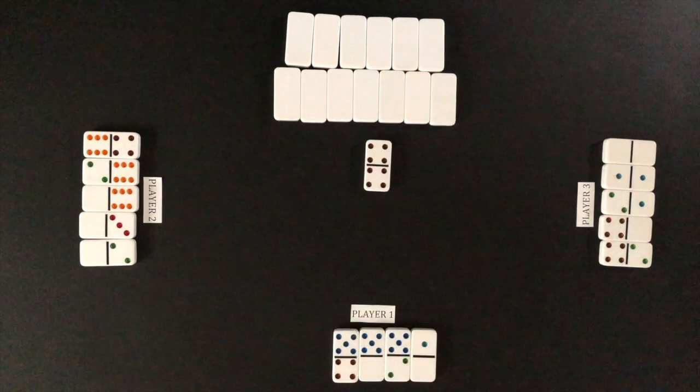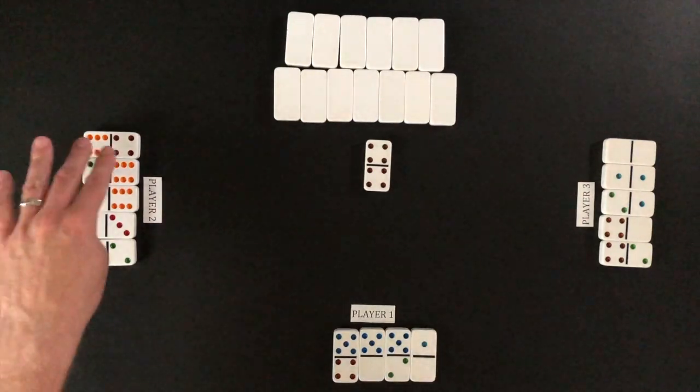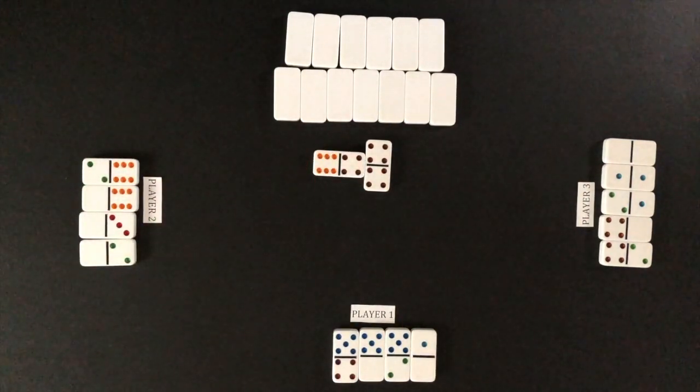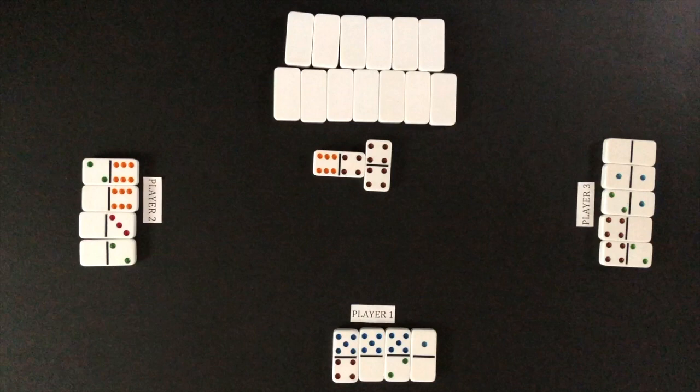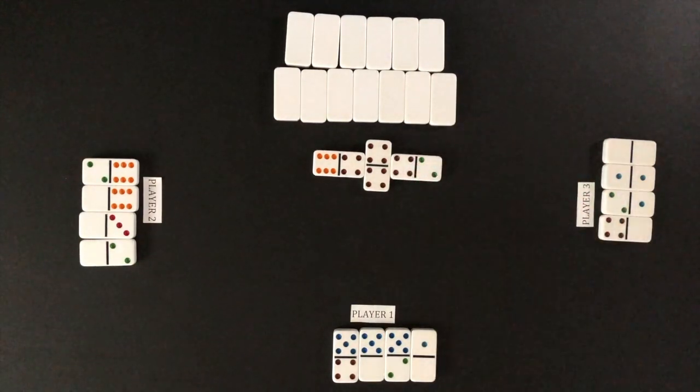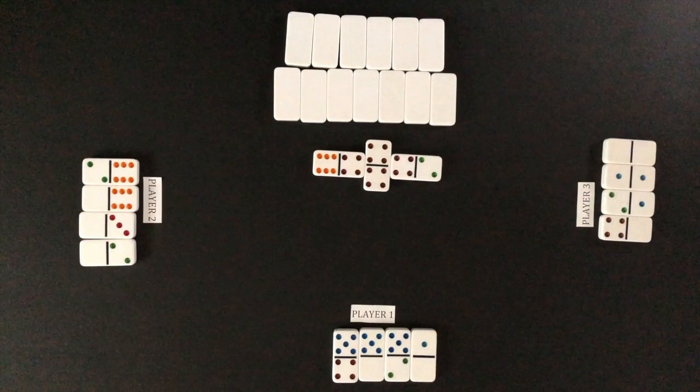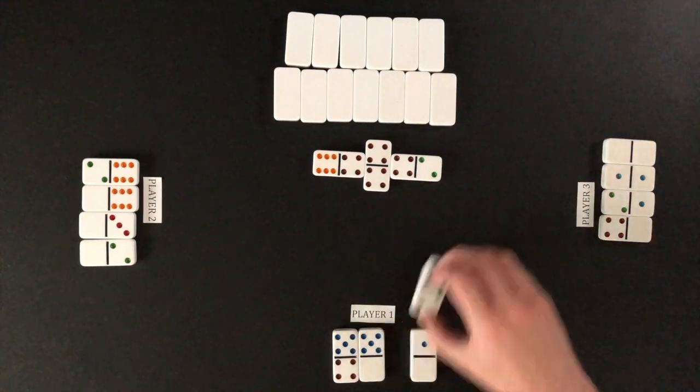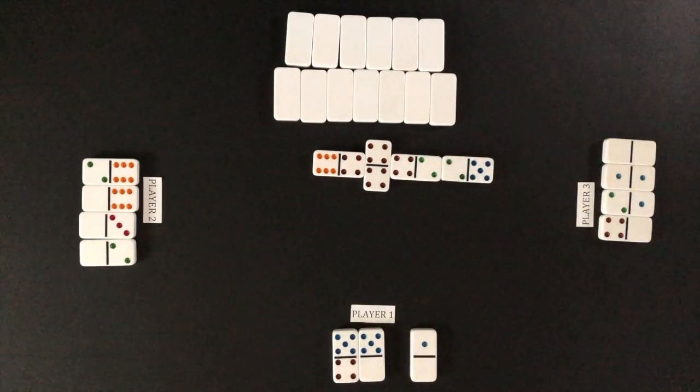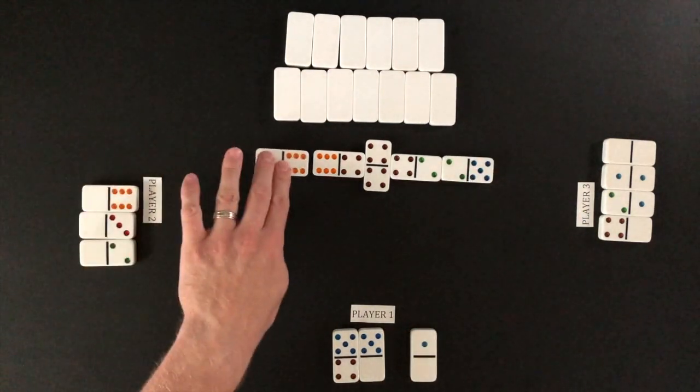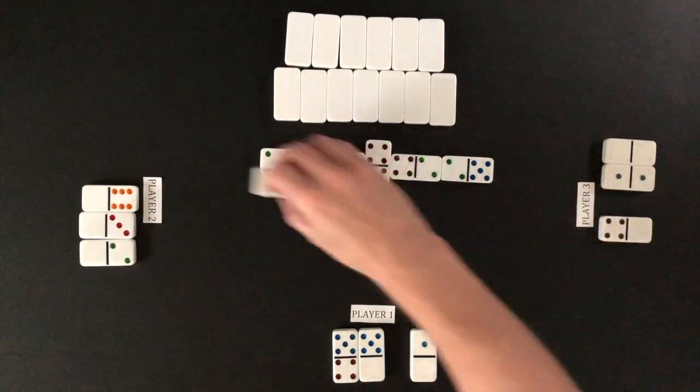Play moves clockwise left. Player two matches the four with the four six domino. Player three now has to match the open four or six. Player three plays the four two matching the fours. There are only ever two open ends. The open ends are now the six and the two. Player one matches the two. Play moves to player two with players continuing to make matches if possible.